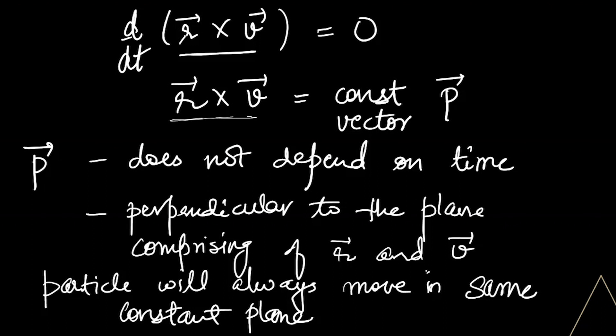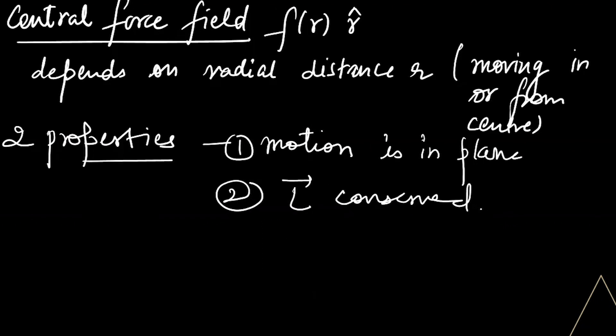And if you want to prove that L is conserved, we got this expression d/dt(R cross V) equal to zero. So we know that angular momentum is R cross V is constant, a constant vector that is independent of time. We know that angular momentum is R cross mV.